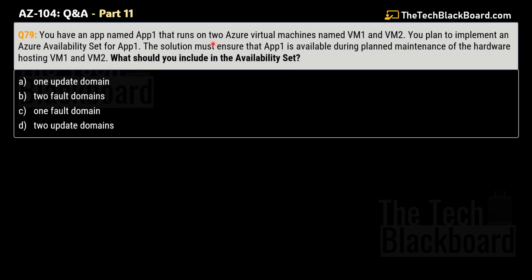Question 79 says that you have an app named App1 that runs on two virtual machines named VM1 and VM2. You plan to implement an Azure availability set for App1. The solution must ensure that App1 is available during planned maintenance of the hardware hosting VM1 and VM2. What should you include in your availability set? Options are: A) one update domain, B) two fault domains, C) one fault domain, D) two update domains. The correct answer is Option D: two update domains.